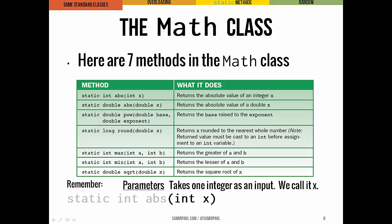And finally, we have the parameters that it takes. So this absolute value method takes a single parameter, one integer, and we call it x.